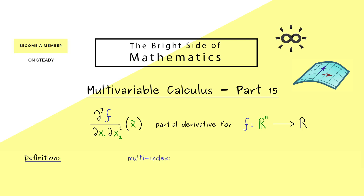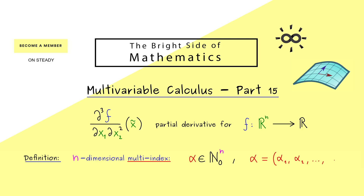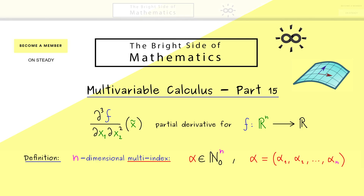To do this we first have to define what we mean by multi-index. We will always have an n-dimensional multi-index, where n is the number of variables for the function f. This multi-index is simply an n-dimensional vector we call alpha, and the components of this vector should be given by natural numbers — importantly, zero is also allowed. So alpha is simply an n-tuple where the components are non-negative integers. The components are called alpha1, alpha2, and so on.